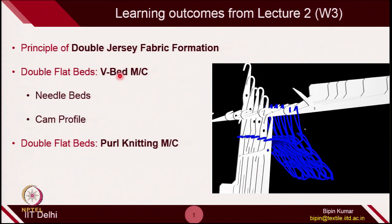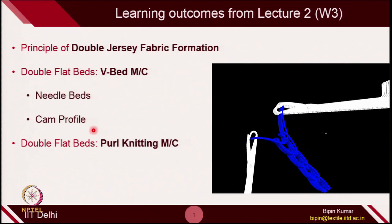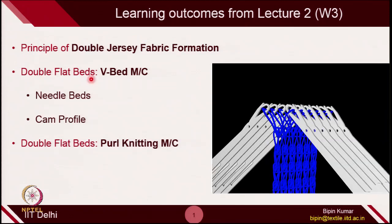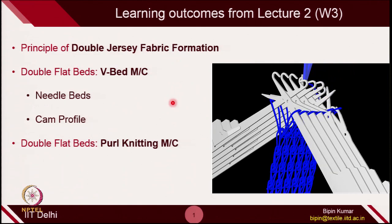In the V bed machine, we will try to understand how the beds operate and how the needles are placed. We will also look at the profile of the cams, which is responsible for the reciprocative movements of needles. Apart from that, in double bed machines, we will also cover a new kind of machine which is the purl knitting machine. The idea is to understand how we can create double jersey fabrics with double bed machines. Let's move to the first part.